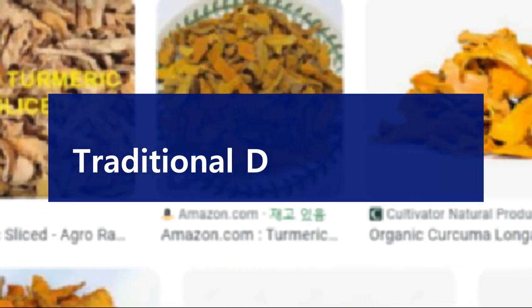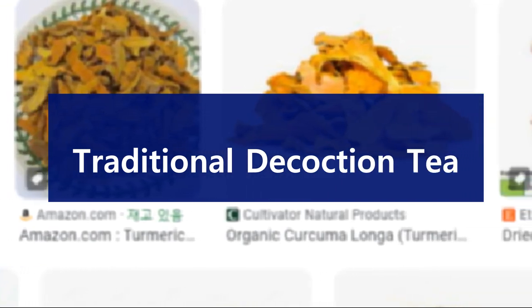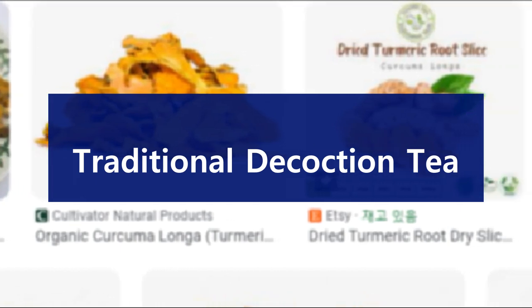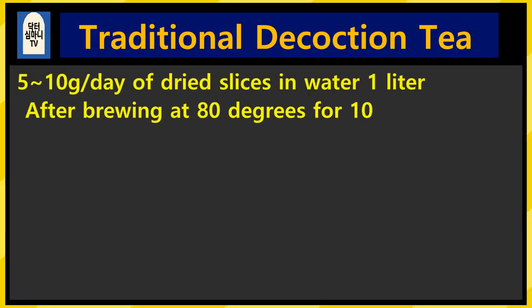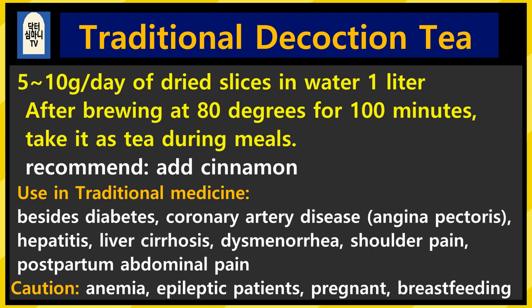If you want the traditional medicine method, you can get dried slices — you can buy turmeric and also make dried slices at home. In 1 liter of mineral water, 5 to 10 grams of dry slices is the usual daily dose — it would be better to start with 5 grams. Decoct for about 100 minutes at about 80°C, because if you decoct turmeric root for only 10 minutes, the active ingredient is not extracted. You can take it like tea during meals. You can also add a sugar-free ingredient — I recommend cinnamon.